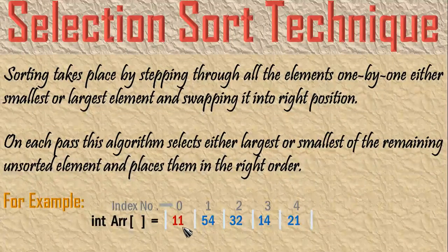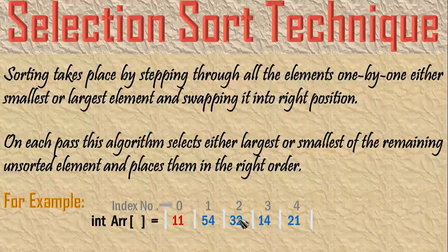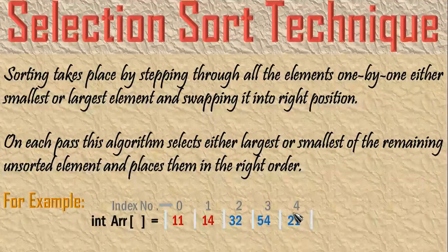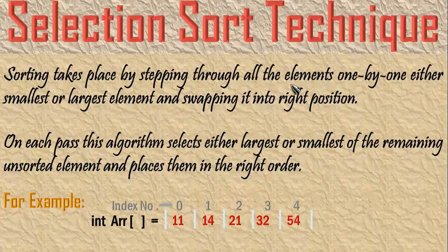If the length of the array is n, then n minus 1 iterations are required for swapping. Here, the first element got sorted. So again it will search for the least element in the remaining part of the array. Here we get 14 as the least number, so the value at index number 3 will get swapped with the value at index number 1. Then for the remaining array from index 2 to the last, 21 is the least element, so 21 gets swapped with the value at index number 2. The fourth iteration swaps index 3 and 4 to arrange in order. After n minus 1 swappings, the array gets sorted.